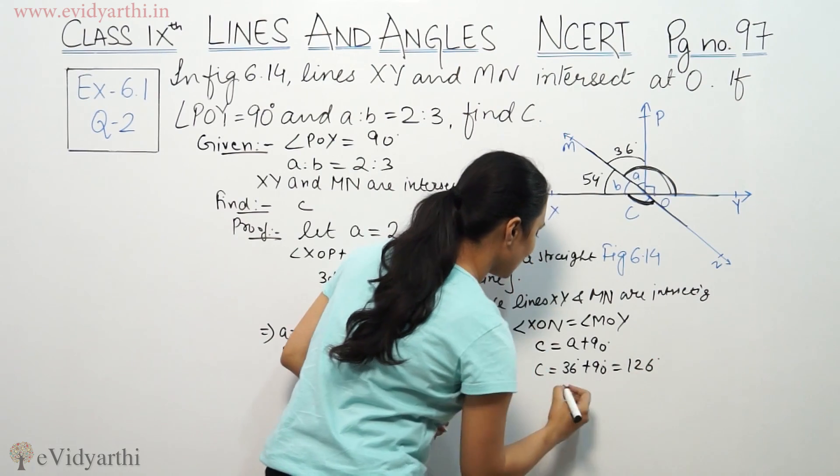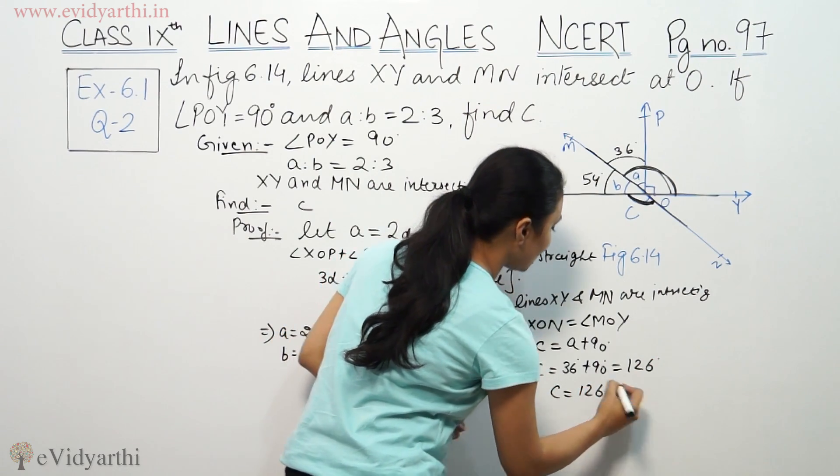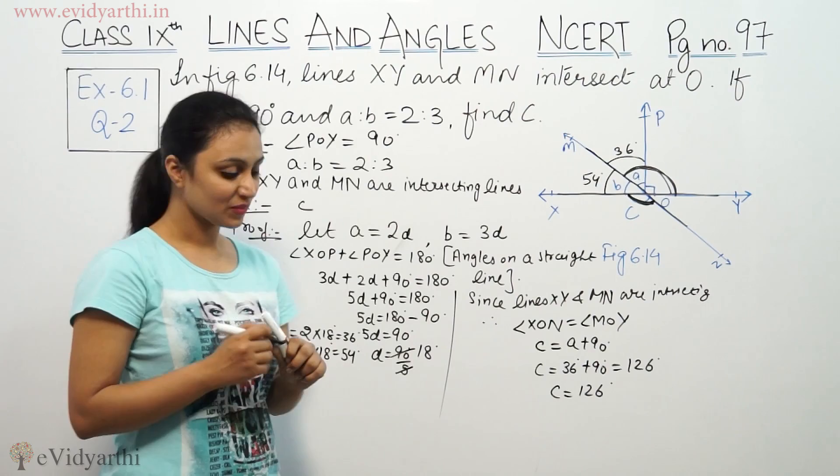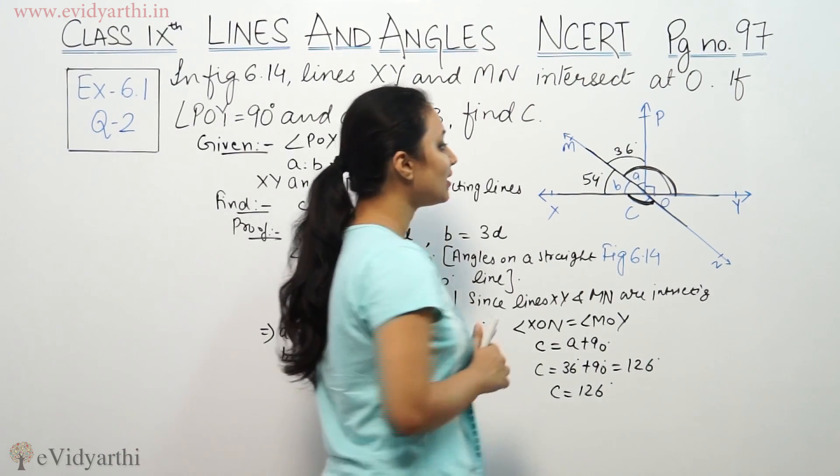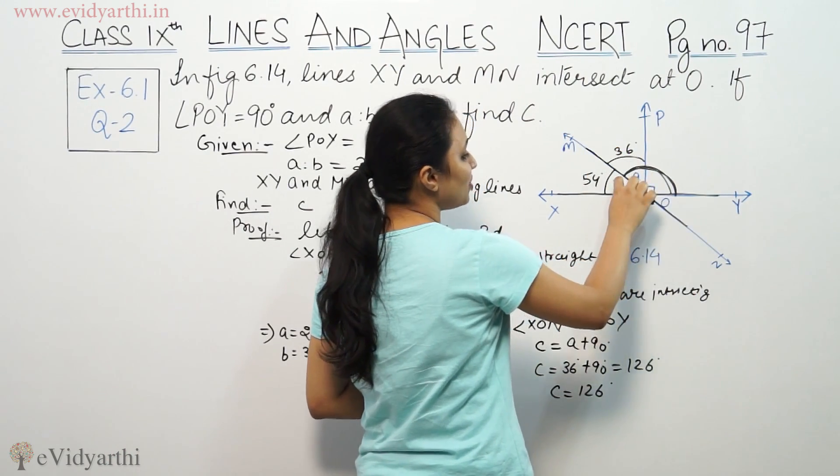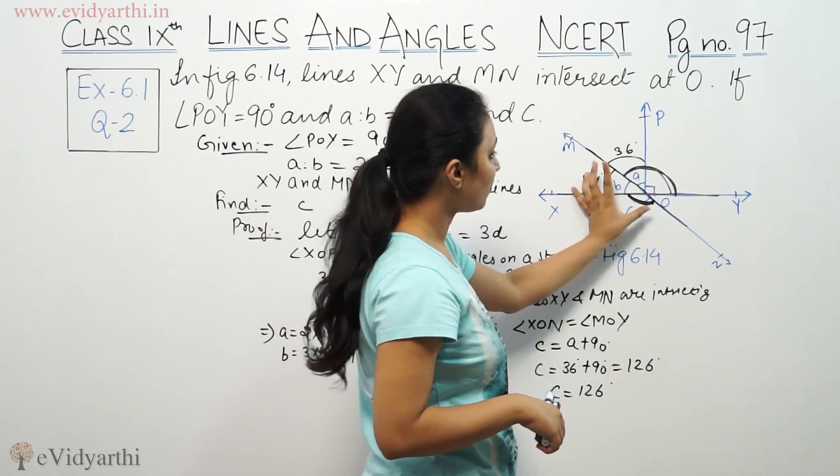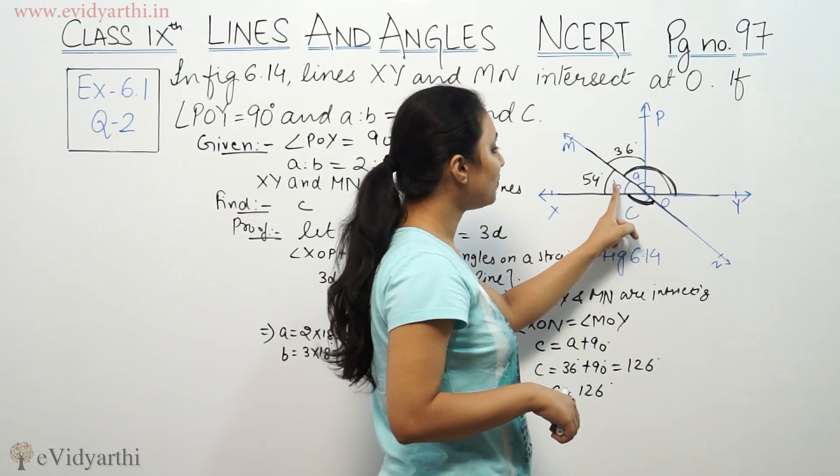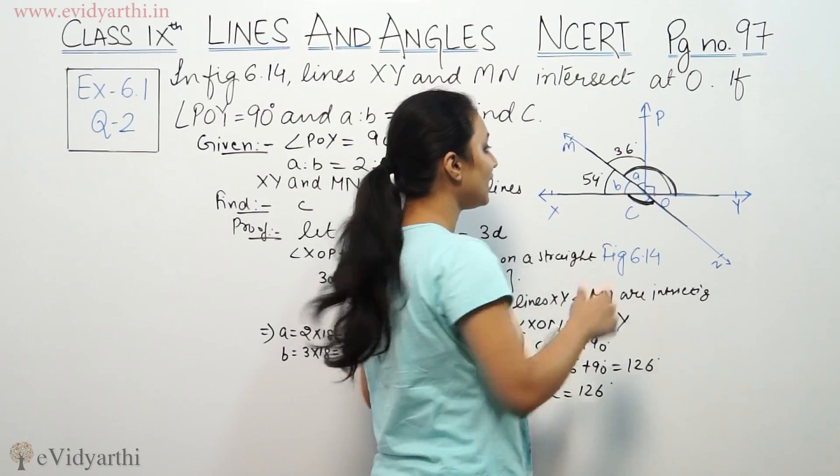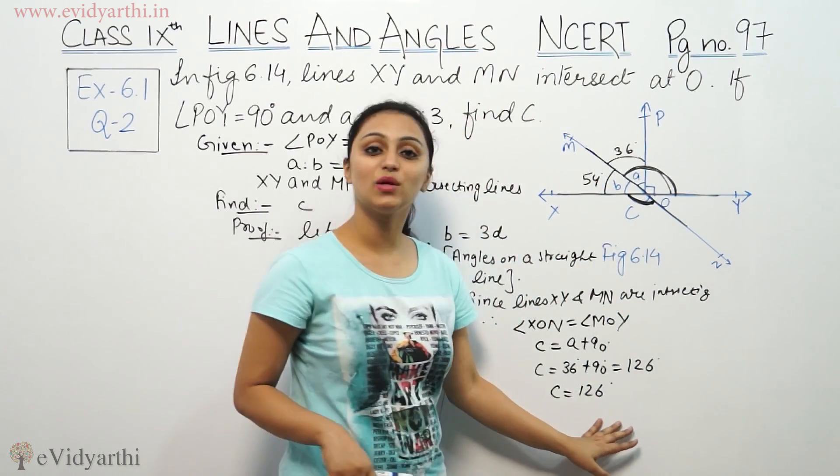So c equals a plus 90 degrees, which is 36 degrees plus 90 degrees. Therefore c equals 126 degrees.